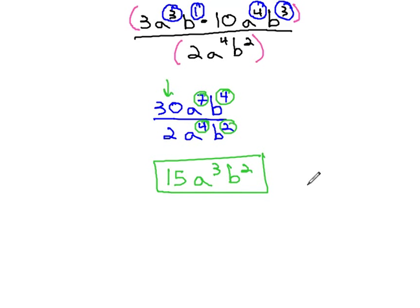Our final answer is 15a cubed b squared. We know we are done, because each variable appears only once in our final solution.